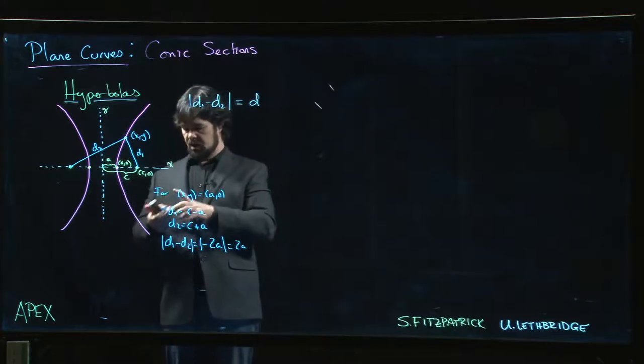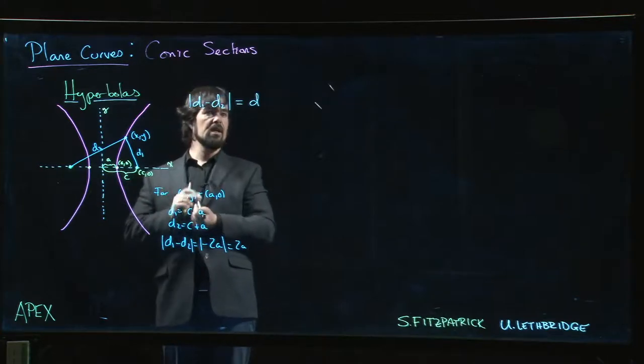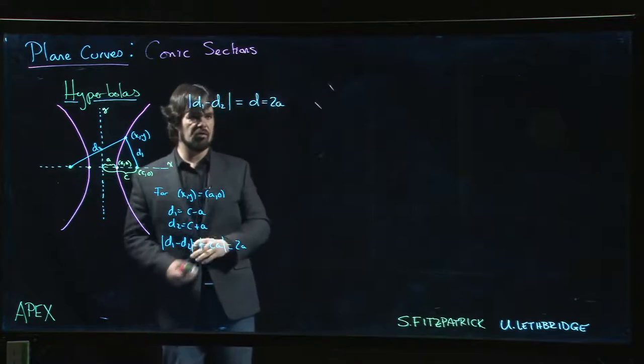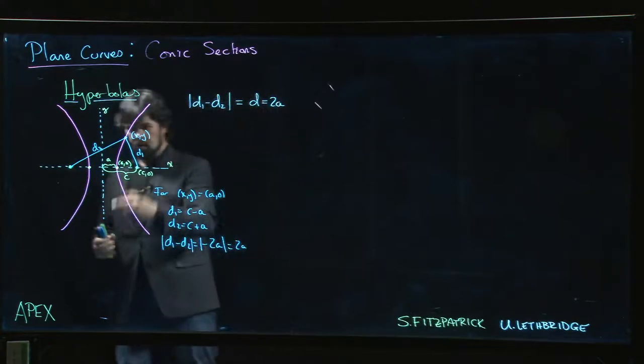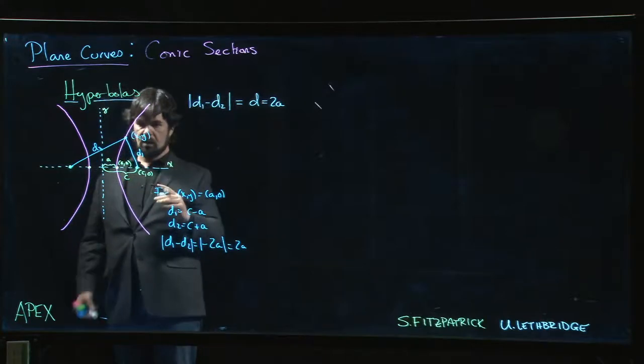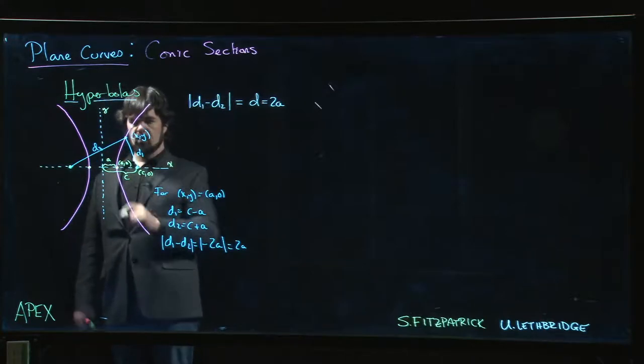The absolute value is just 2a. So we can actually work out that the d in question here is just 2a. d is 2a. And of course now that we've put coordinates in, we can say what those coordinates have to be for any other point on the hyperbola.